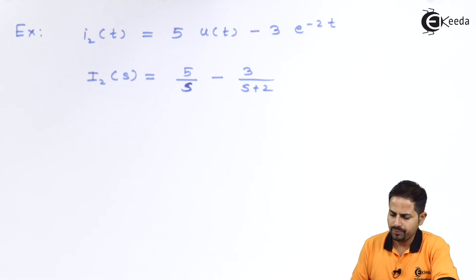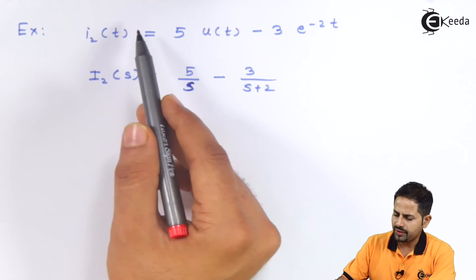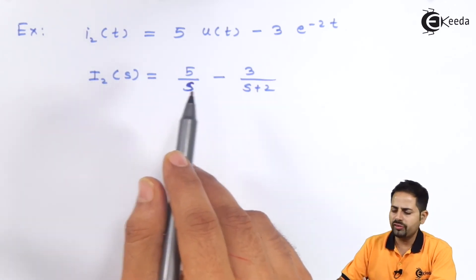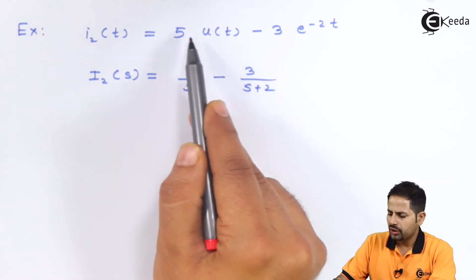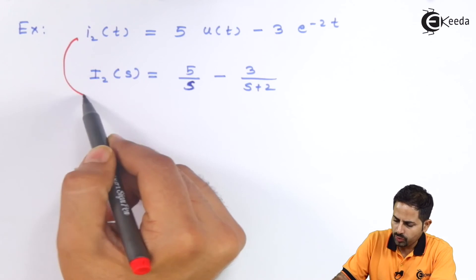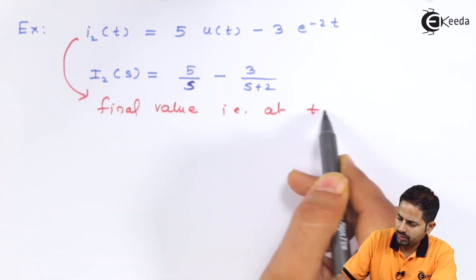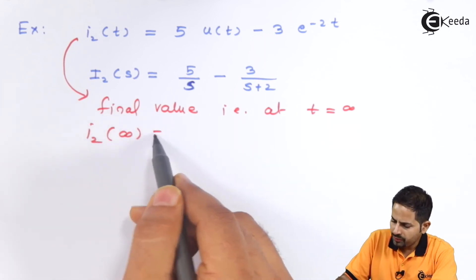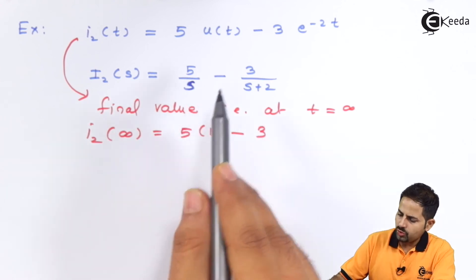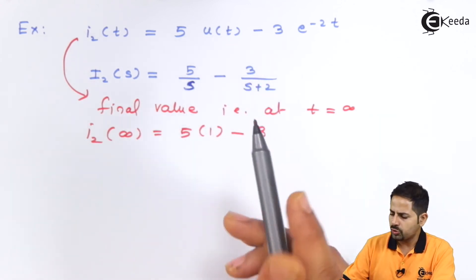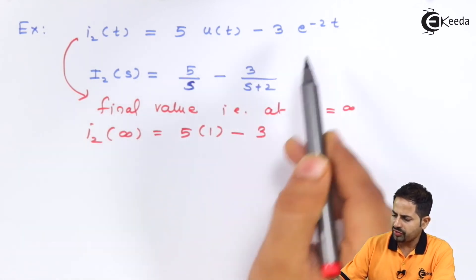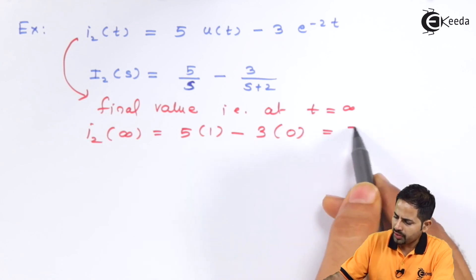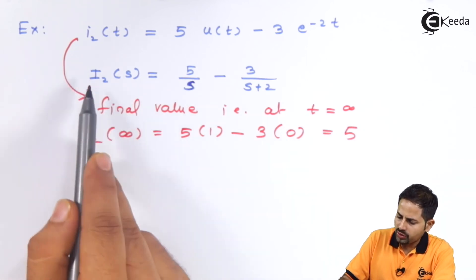Now we will solve an example using the Final Value Theorem. We are given i2(t) = 5·u(t) - 3·e^(-2t). The final value is at t = infinity: u(t) tends to 1, and e^(-2·∞) = 0. So the final value i2(∞) = 5·1 - 3·0 = 5. We will now verify this by applying the Final Value Theorem.